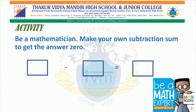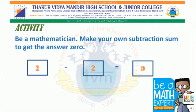Now it's time for activity — be a mathematician! Make your own subtraction sum to get the answer 0. Let's solve: 2 minus 2 is equal to 0. Similarly, you can write any two identical numbers to get the answer 0. For example, 4 minus 4 is equal to 0, 9 minus 9 is equal to 0, 1 minus 1 is equal to 0, and so on.